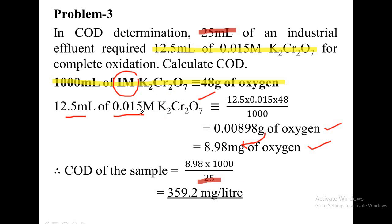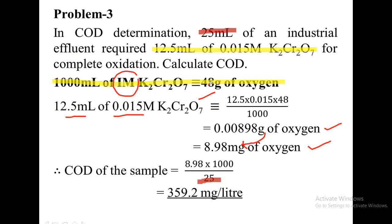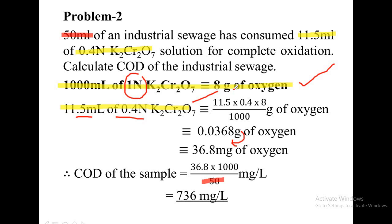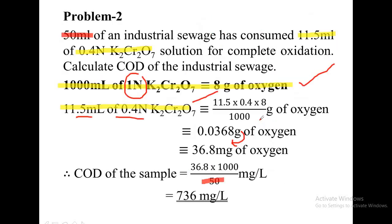Problem 2 and problem 3 are very similar. In problem 2, normality data is given for dichromate, which is equivalent to 8 gram of oxygen. In problem 3, dichromate strength is provided in molarity, so the formula uses 48 gram of oxygen. Problem 1 is a direct substitution type using the FAS formula, which is obtained by studying the theory behind the COD experiment. Hope I have made things very clear to you.